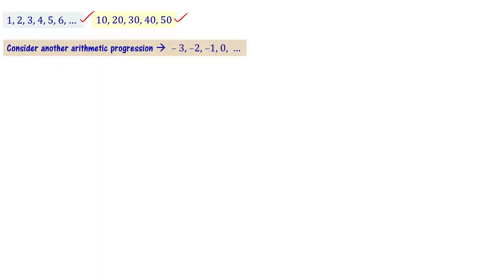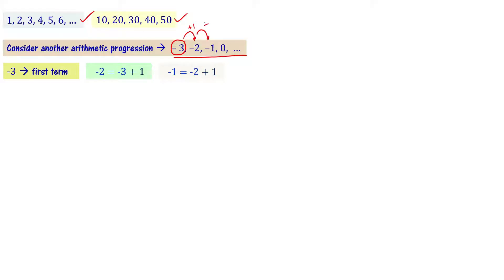Let us consider another arithmetic progression: minus 3, minus 2, minus 1, 0, and so on. This is an arithmetic progression. Minus 3 is the first term. Minus 3 plus 1 gives the next term, minus 2. Minus 2 plus 1 gives minus 1. Minus 1 plus 1 gives 0. So by adding 1 to each preceding term, we get the next term.